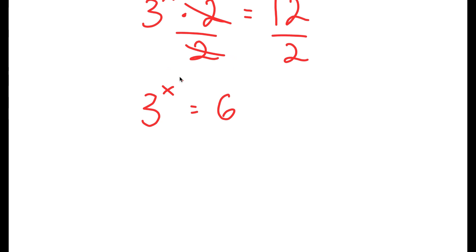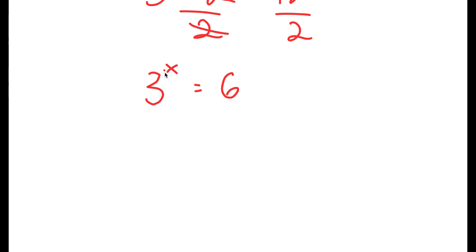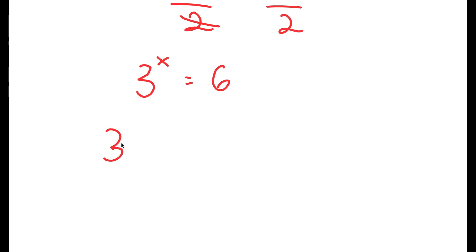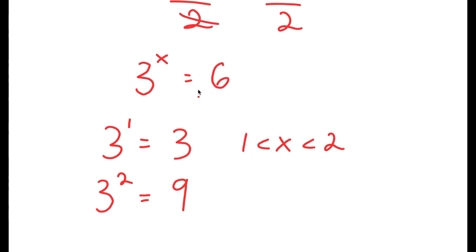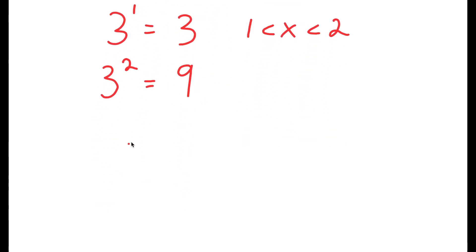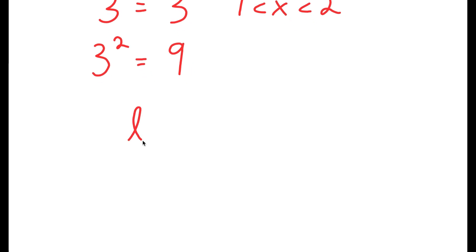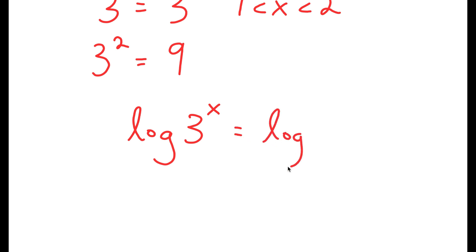To solve this, we know that x is going to be a decimal because 3 to the power of 1 is 3 and 3 to the power of 2 is 9. So x is going to be somewhere in between 1 and 2. We want to find the exact value of x, so I'm going to start by taking the log on both sides. So I get log 3 to the power of x is equal to log 6.